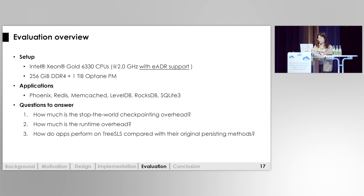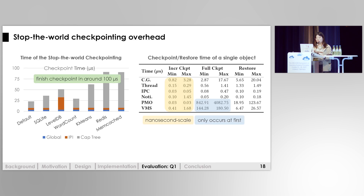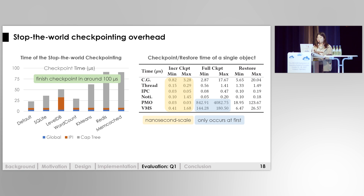We answer several evaluation questions. The first is: how much is the stop-the-world checkpoint overhead? We give the total time required to checkpoint different applications. The result shows that our checkpoint can be finished in around 100 microseconds. We also break down the time required to checkpoint each object in the capability tree. The result shows that the incremental checkpoint of different objects can be taken at the nanosecond scale. A full checkpoint is more costly because it rebuilds the object from scratch, but since it only occurs the first time, it is acceptable.